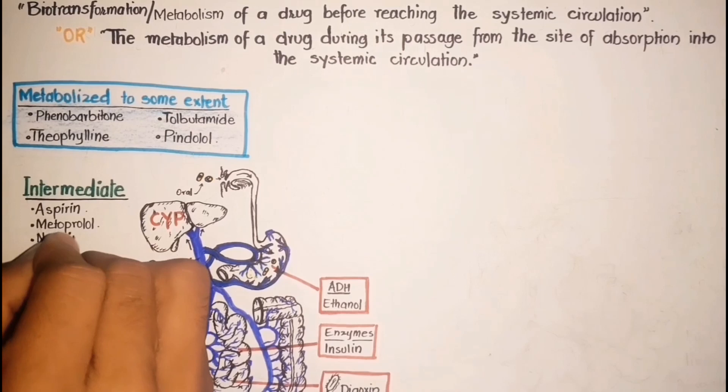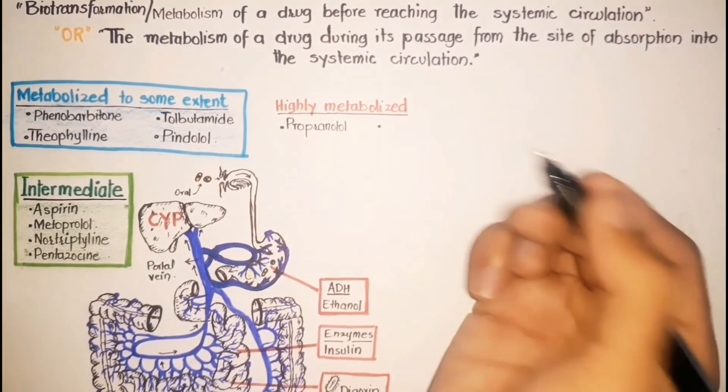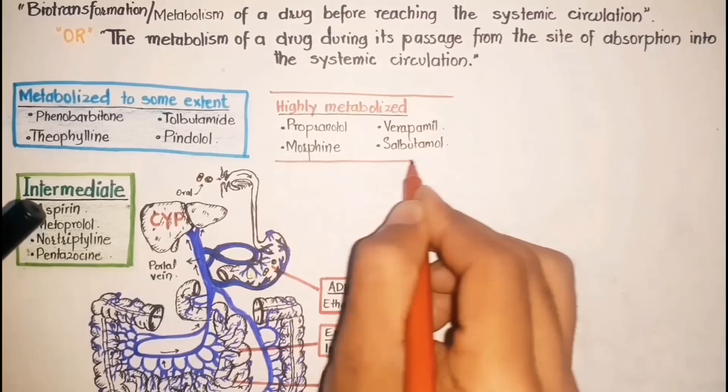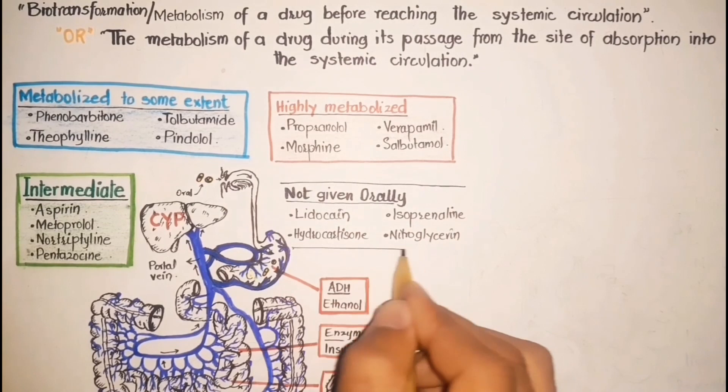In contrast, drugs that are highly metabolized are propranolol, verapamil, morphine, and salbutamol. While lidocaine, isoprenaline, hydrocortisone, and nitroglycerin are not given orally due to the high rate of first pass metabolism.